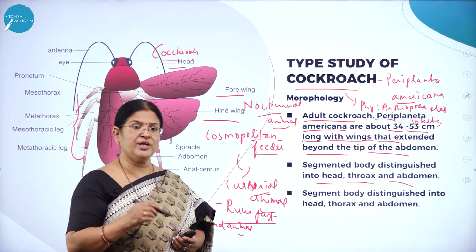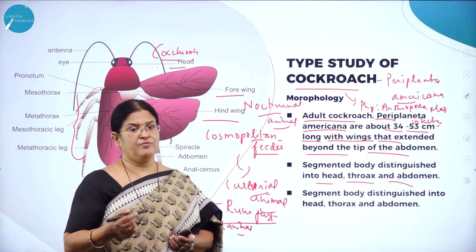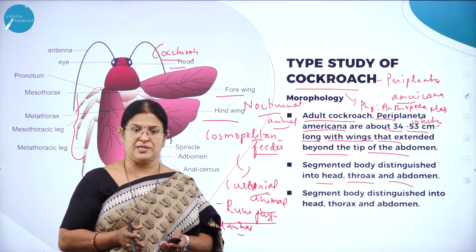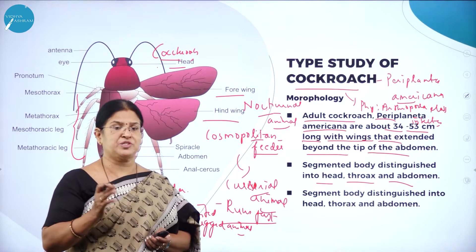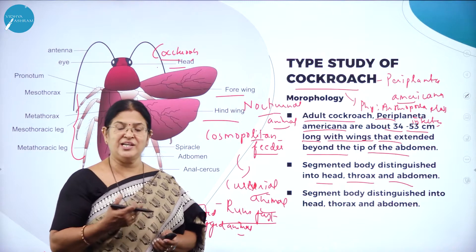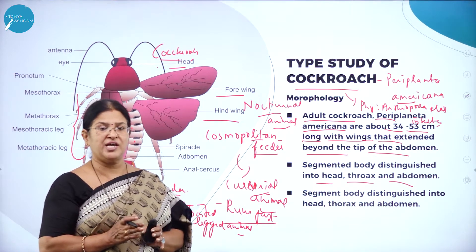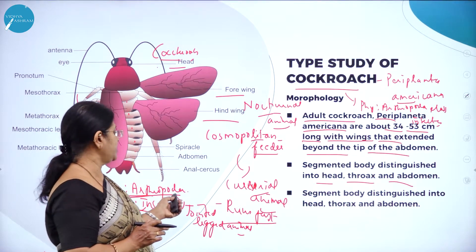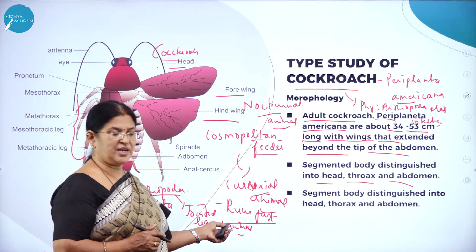The cockroach is very unique because it is a cosmopolitan feeder, and one must see its digestive system. Now dissection of cockroach has been banned, so we cannot demonstrate it. Dissection means cutting open the body of an animal and exposing the parts while retaining them intact. Cockroach dissection and frog dissection were included in the first PUC syllabus previously, but now it is only theoretical study.